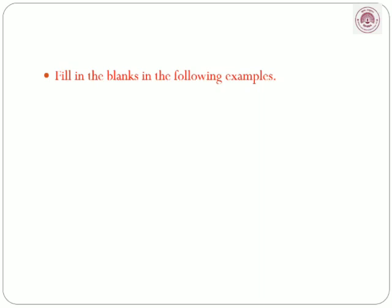Let us recall. Fill in the blanks in the following examples. 2a plus 3a — first we add the numerals, then the variable is a, so 2a plus 3a is equal to 5a. Second question: 7b minus 4b — 7 minus 4 is 3, variable is b, so 7b minus 4b is equal to 3b.